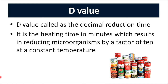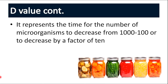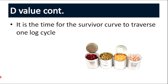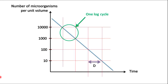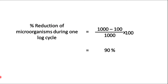D-value represents the time for the number of microorganisms to decrease from 1,000 to 100, or to decrease by a factor of 10. We can also say the D-value is the time for the survival curve to decrease by 1 log cycle. D-value remains the same for each of the log cycles on this curve. If we calculate the percentage reduction of microorganisms during one log cycle, it comes to 90%.